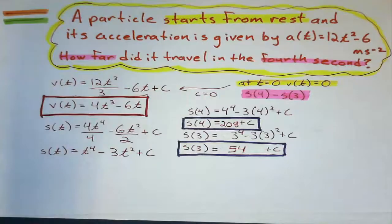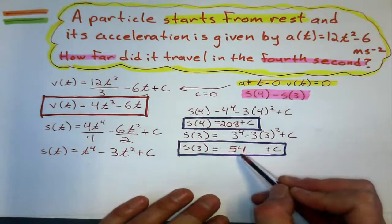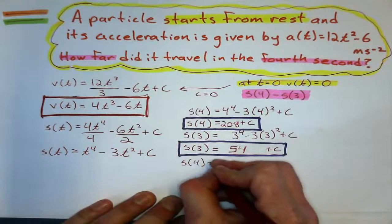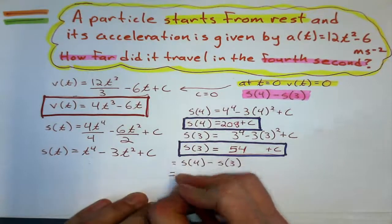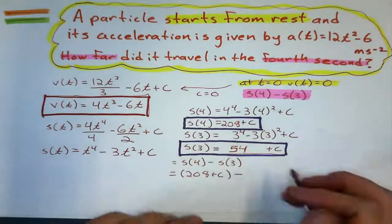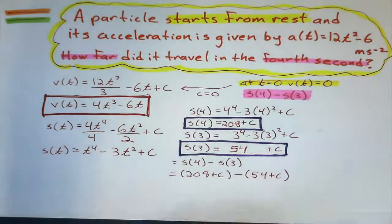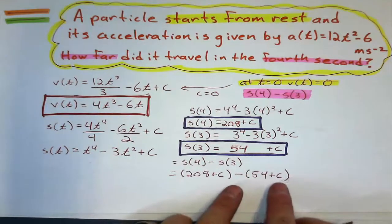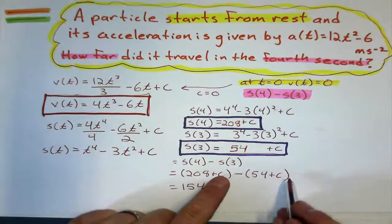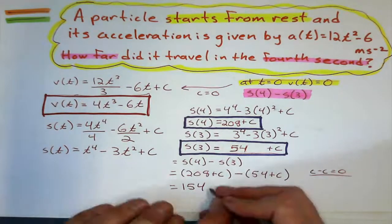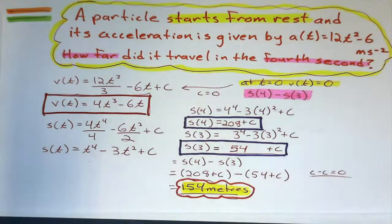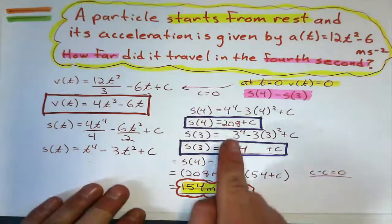These two results are crucial. The distance in the fourth second is the distance after four seconds minus the distance after three seconds: 208 plus C minus 54 plus C. The C's cancel out — C minus C equals zero — giving 208 minus 54, which equals 154 meters. That's how far the particle travels in the fourth second. Not too bad — hopefully without the mistakes made along the way.